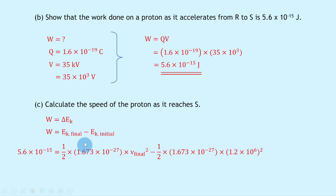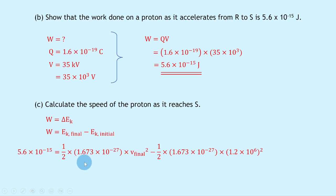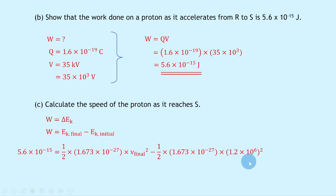Expanding each term: Eₖ final is ½mv_final² and Eₖ initial is ½mv_initial². So the work done equals ½ × 1.673 × 10⁻²⁷ (the mass of a proton from the data sheet) × v_final² minus ½ × 1.673 × 10⁻²⁷ × (1.2 × 10⁶)².